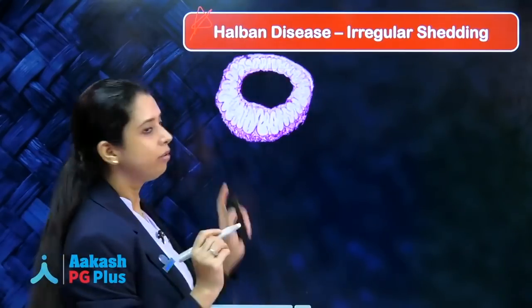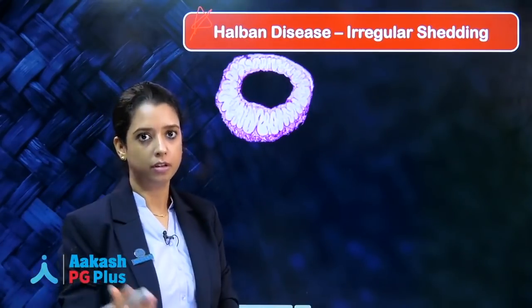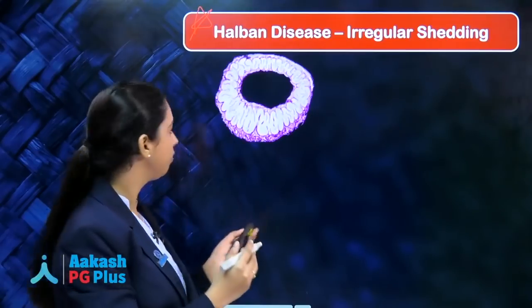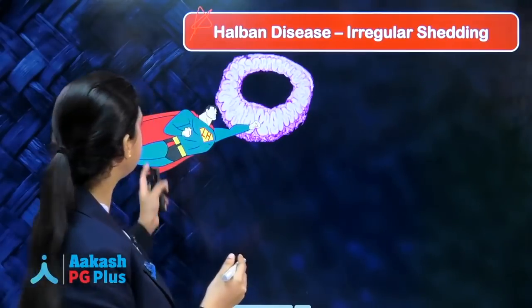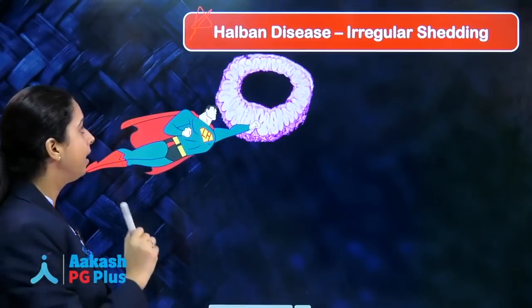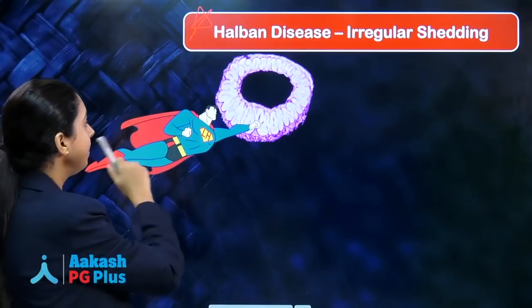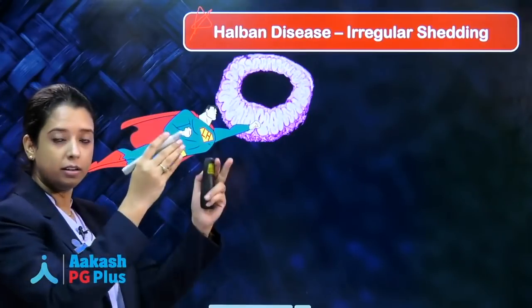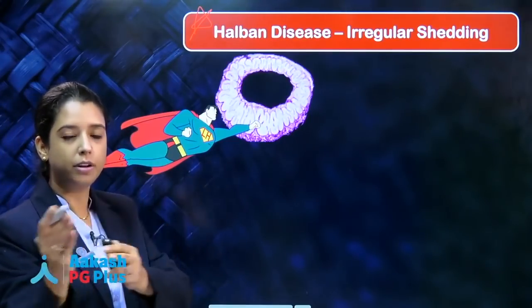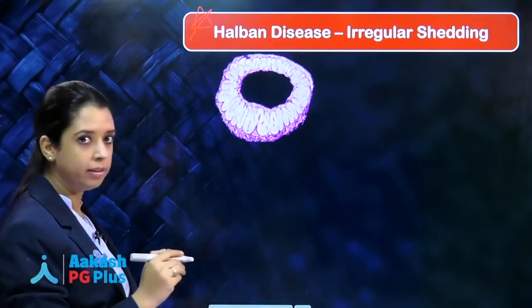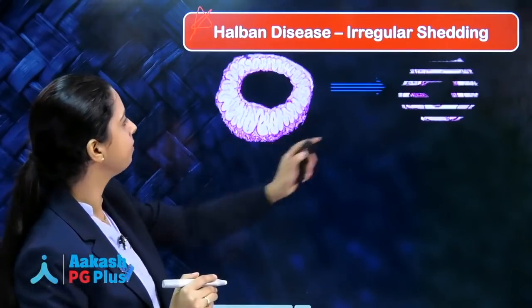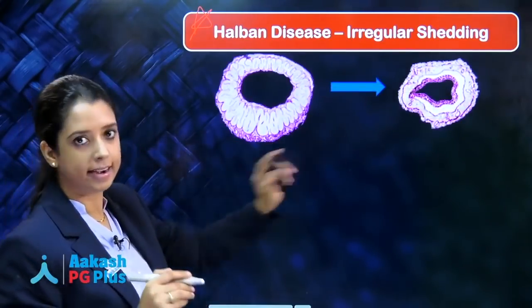The corpus luteum forms after ovulation. Who is the savior of this corpus luteum? It is LH. So LH is the savior of corpus luteum. When the luteal phase ends, once the luteal phase starts ending, the LH goes. As a result, the corpus luteum starts to become atretic.